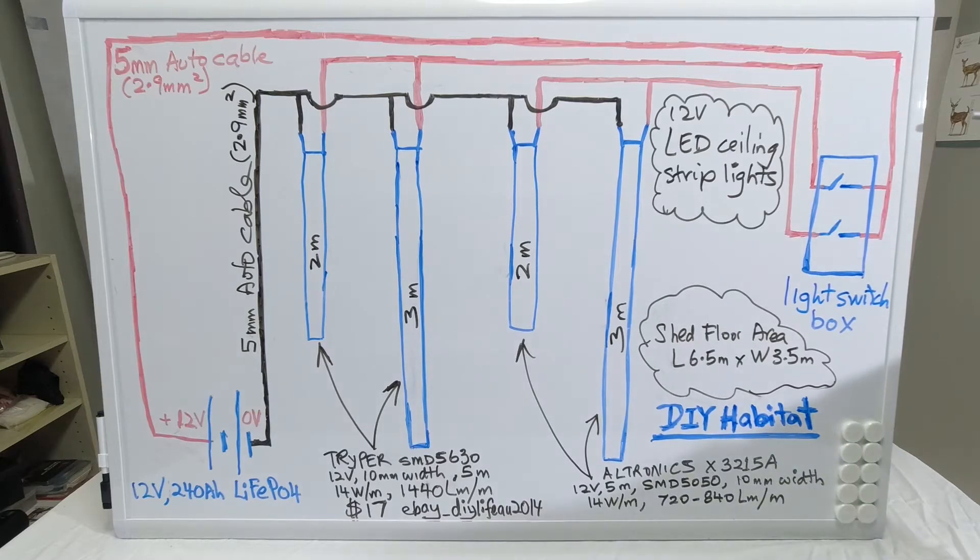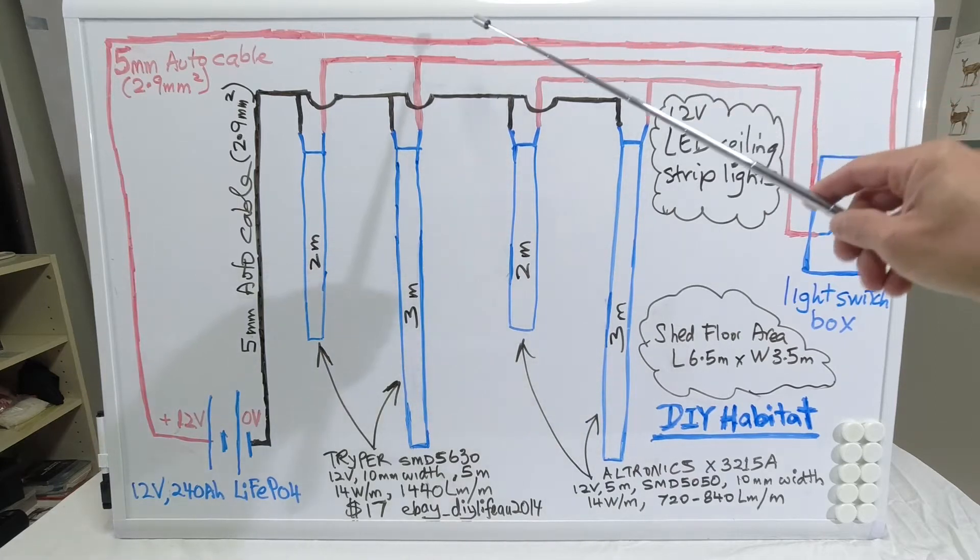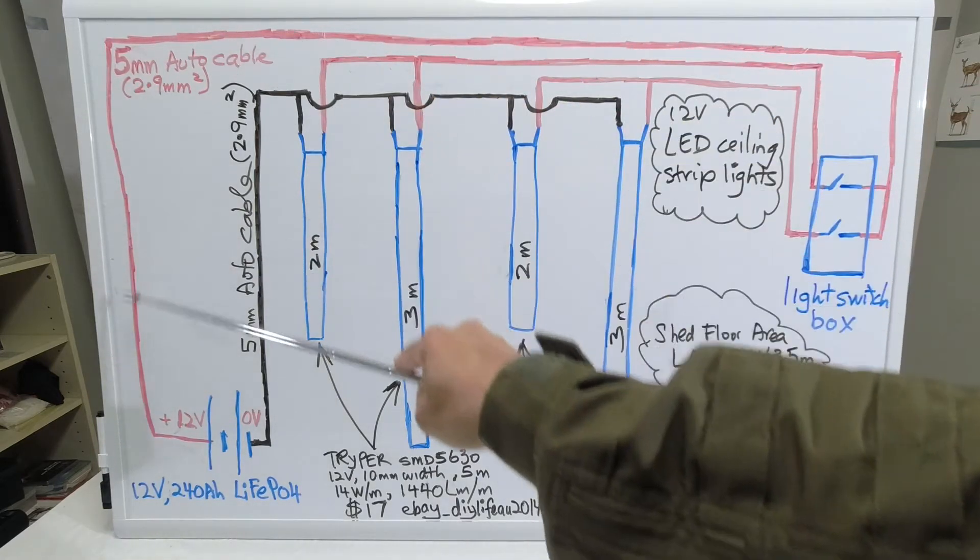The entrance to the shed is just a door here. You come in the door, you can turn on switch 1 or switch 2. The switch is powered by a circuit positive circuit that runs to a 12-volt 240mAh lithium-ion phosphate battery.